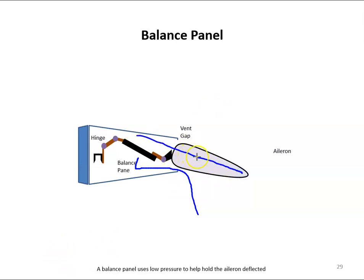Conversely, if the aileron moved in the opposite direction, we get the high pressure here and the low pressure here, and that would help hold the aileron in the opposite position. So that's what a balance panel does.